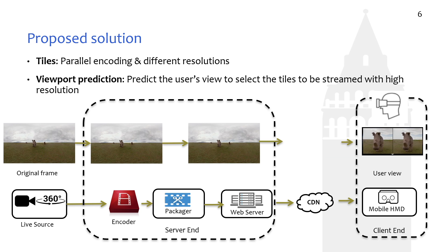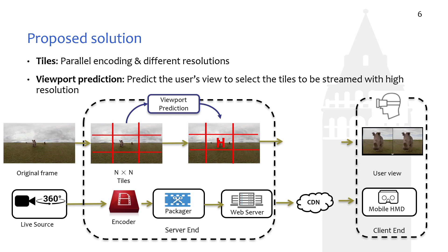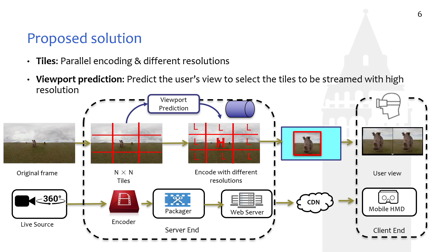Based on the standard, all tiles can be encoded in parallel with different resolutions. We first divide videos into small tiles. Then, based on the user's preference, we select the tiles the user is likely to watch to be encoded with high resolution, and encode the rest with low resolution. For example, we can guess that the user wants to watch the Reynolds — we select the center tile as the target tile and encode it with high resolution, encoding the rest with low resolution. Using this approach, the modified video segment is much smaller than traditional ones, reducing bandwidth consumption.